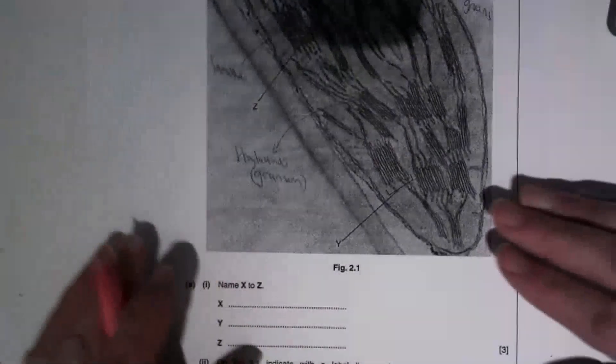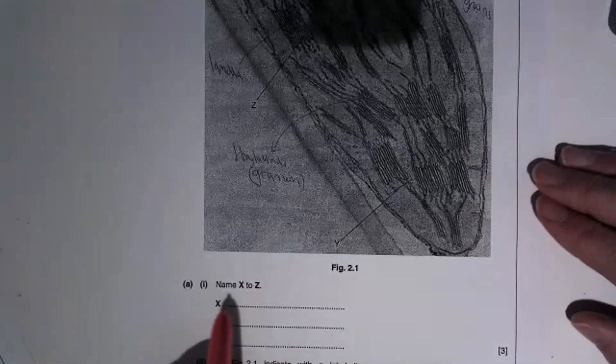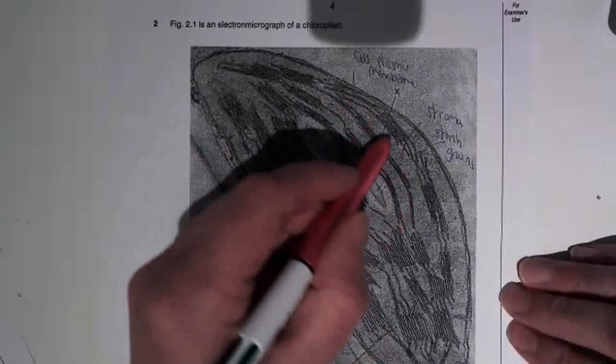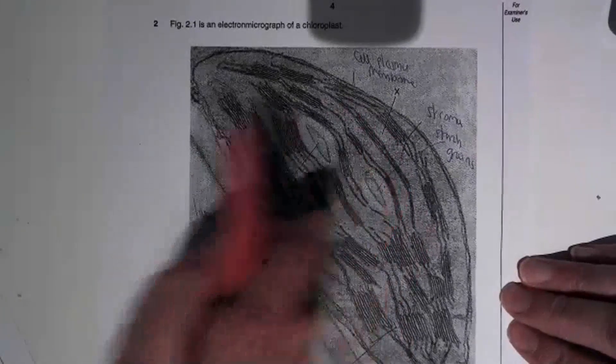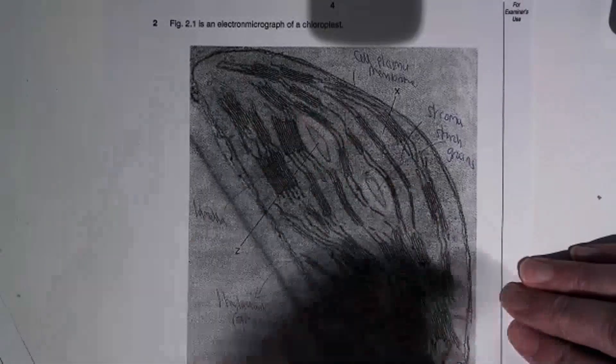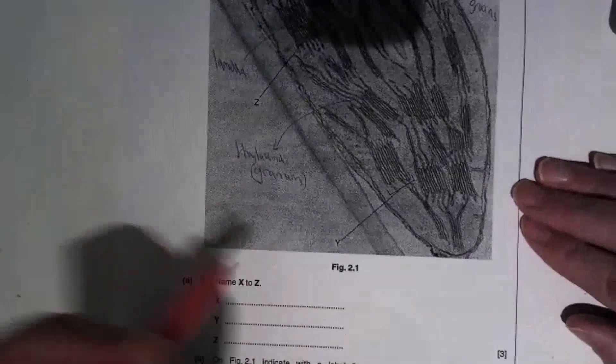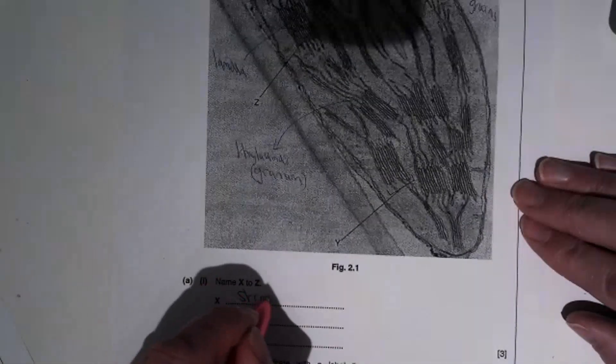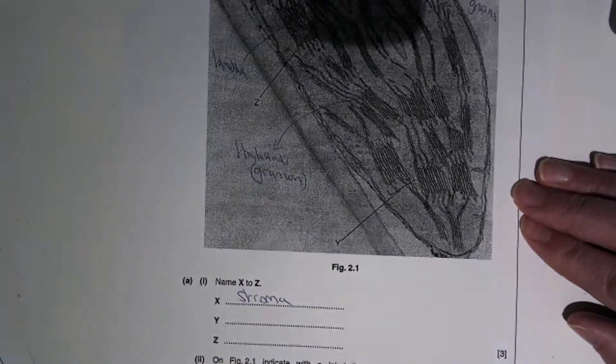The question then says name X to Z. So if we look at X, it's not put into any particular structure, so that must be the chemicals that are inside the chloroplast, which is called the stroma. And that's where the light independent stage of photosynthesis takes place.